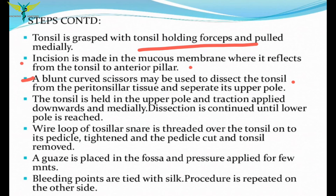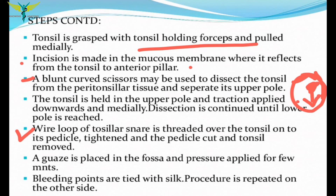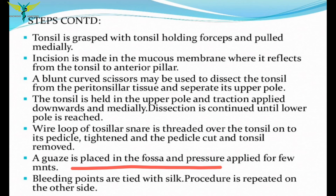A blunt curved scissors is used to dissect the tonsil from the peritonsillar tissue, separating it from the upper pole. The tonsil is held at the upper pole and traction is applied downwards. Dissection is continued on the sides until the lower pole of the tonsil is reached, completing the dissection from upper pole to lower pole.